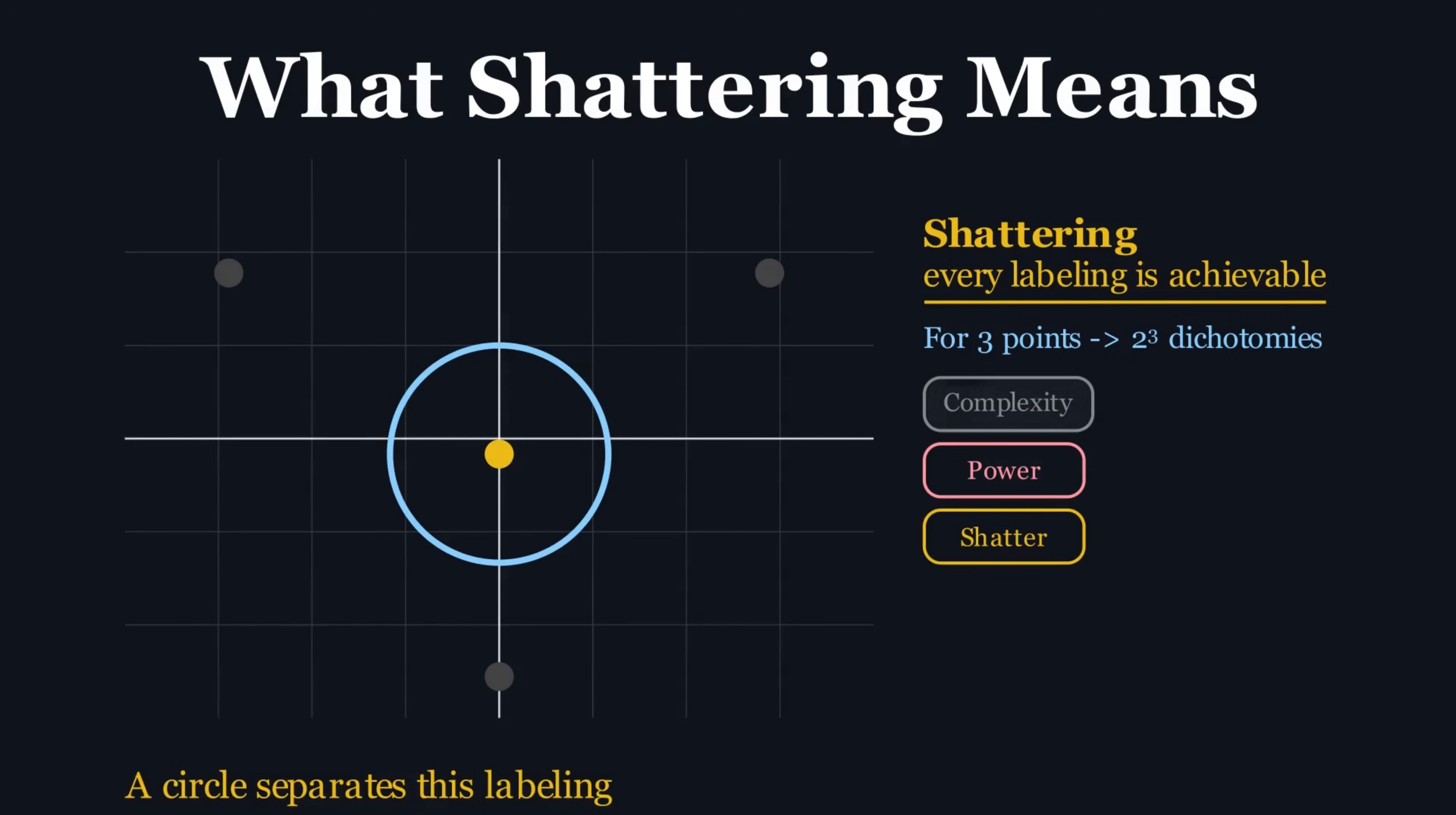It's a precise, mathematical way of saying how flexible a model is, and this is where the proof comes in. PAC learning gives us a formula, a generalization bound, that connects everything.